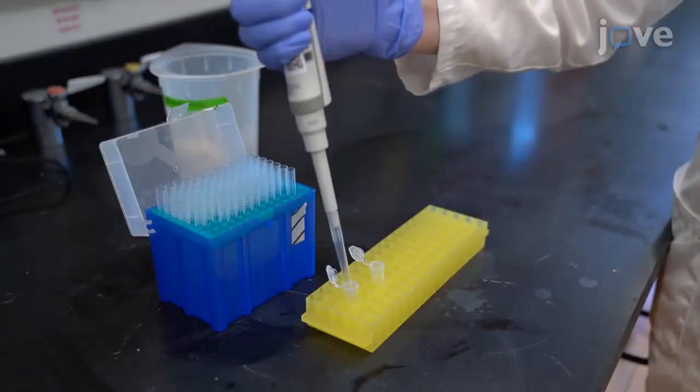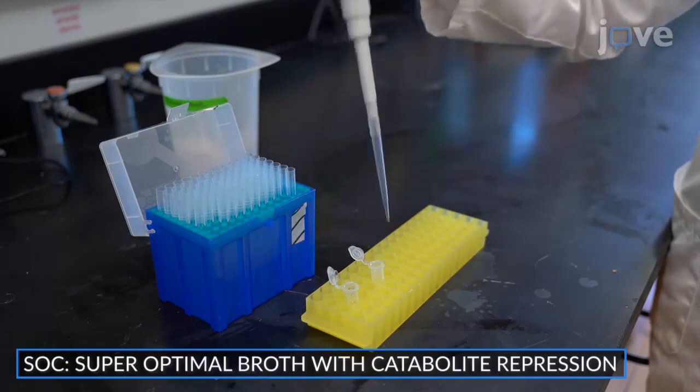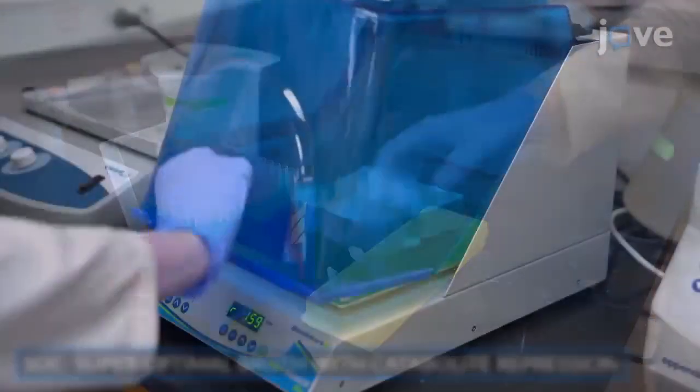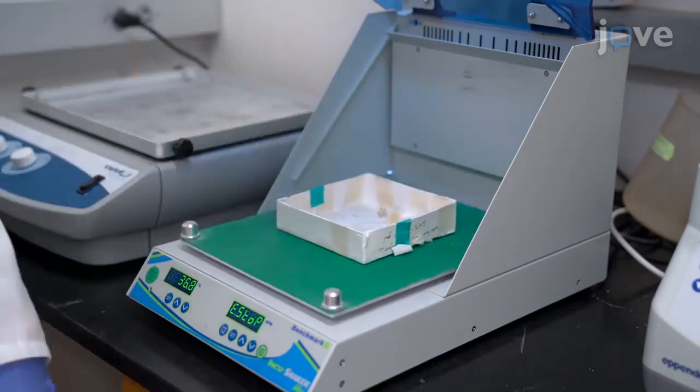Next, add 200 microliters of 37 degrees Celsius SOC medium to the tubes and incubate the cultures for 1 hour at 37 degrees Celsius and 200 rotations per minute.